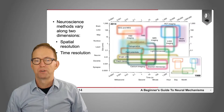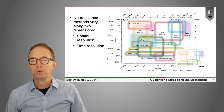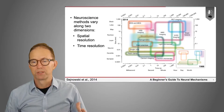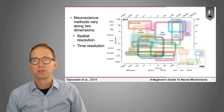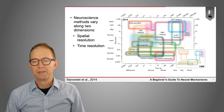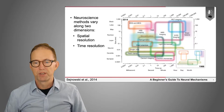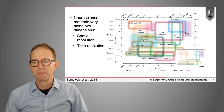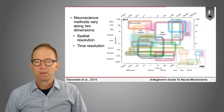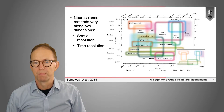One important thing to understand is that neuroscience methods vary along at least two different dimensions. One is what we call spatial resolution — that's the size of the features that the method can resolve. The other is temporal or time resolution, which is the speed at which it can resolve events. This is a well-known figure originally published by Sanofsky and colleagues back in 1988, laying out all the different ways one can measure brain function along both time and spatial dimensions.